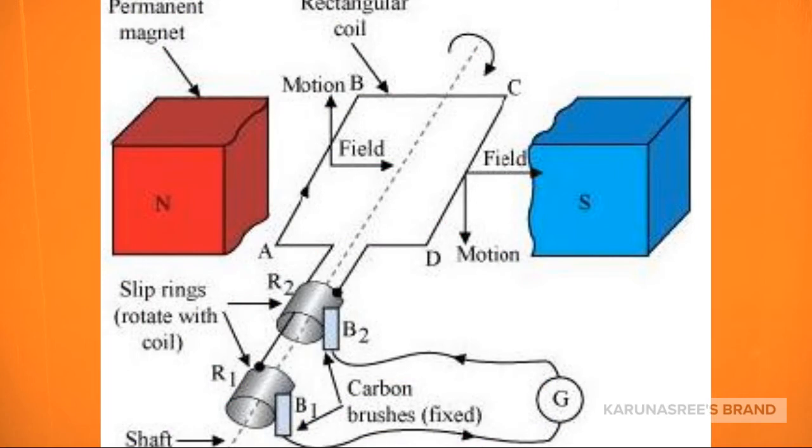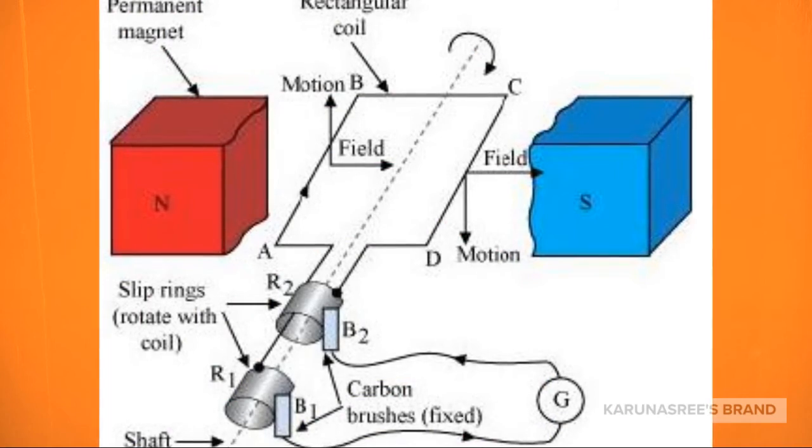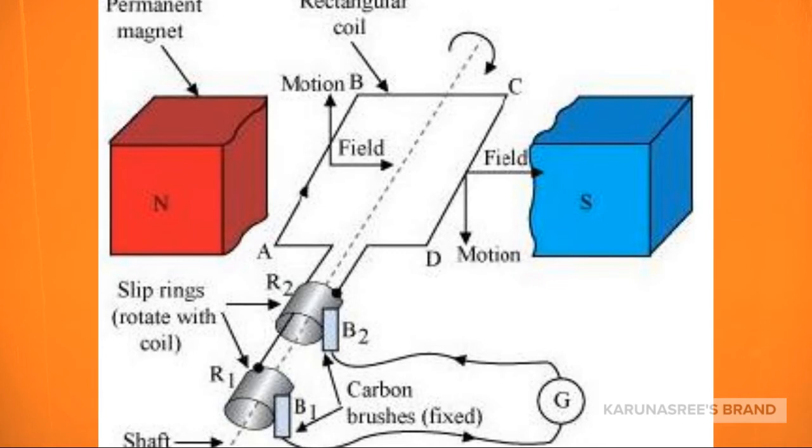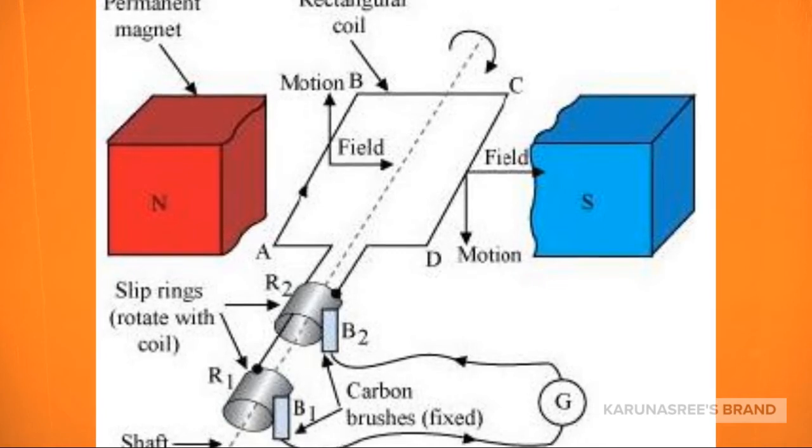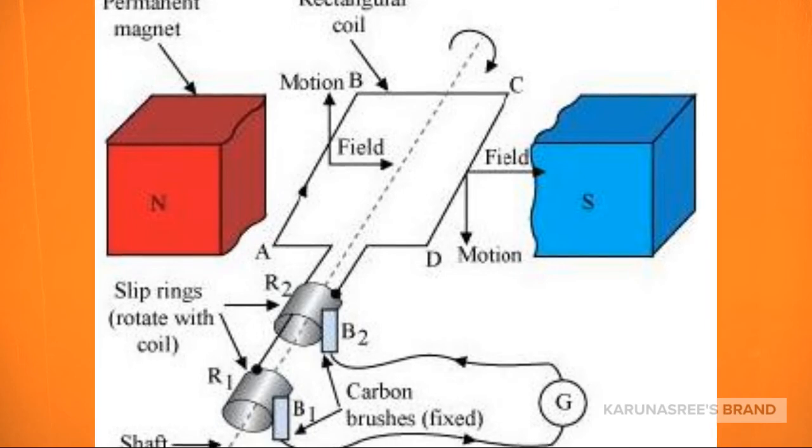This is the AC generator. The electric charge moves in one direction for a very short time and then flows in the reverse direction.